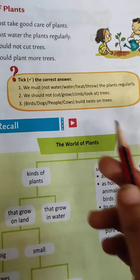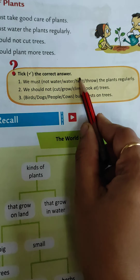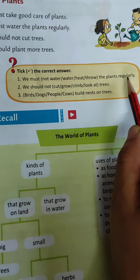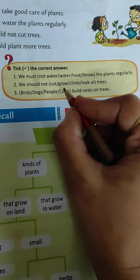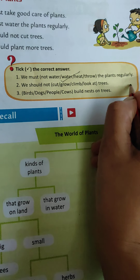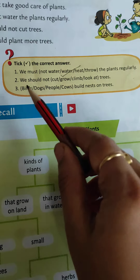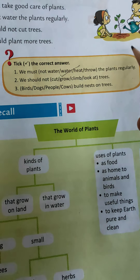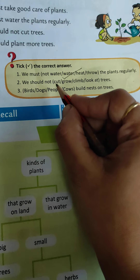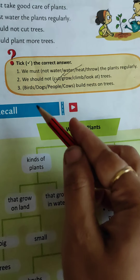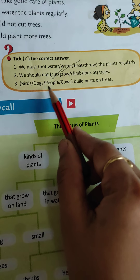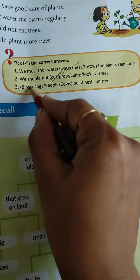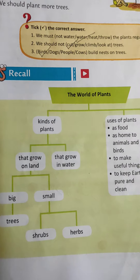Now let's take the correct answers. We must water the plants regularly. Second, we should not cut trees. Third, birds build nests on the trees.